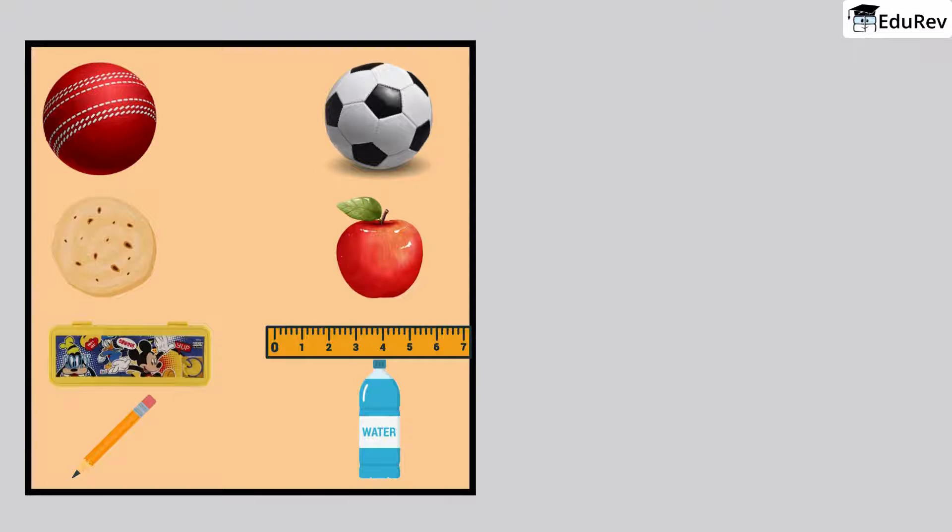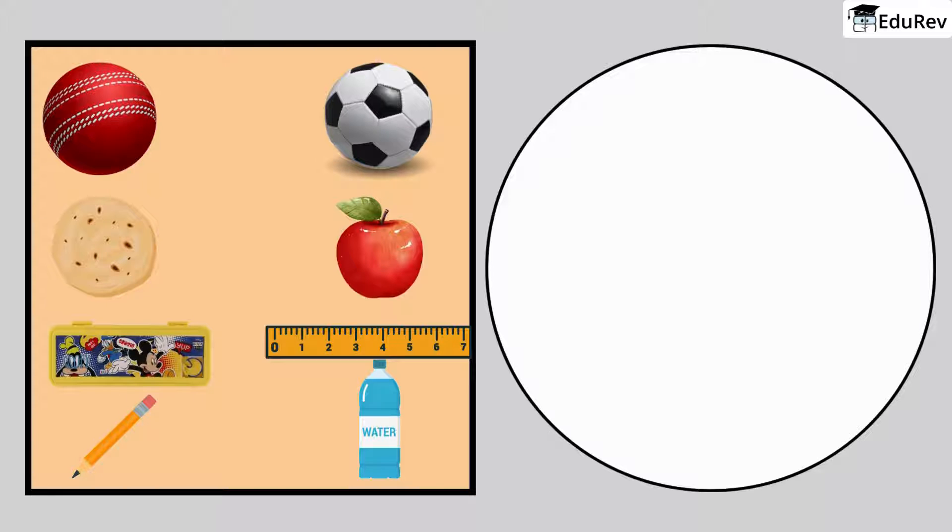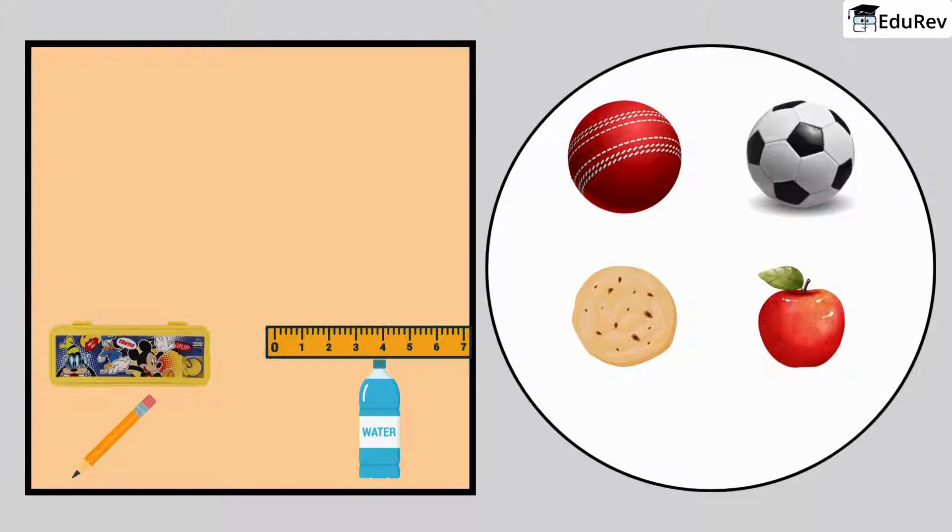Moving on to the exercise, look at this picture. Can you see any round objects here? Draw them in this circle. Yes, we can draw a football, a cricket ball, a chapati and an apple.